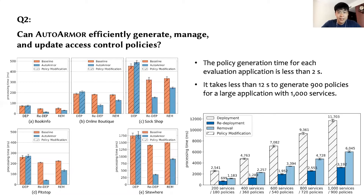The second question is: can AutoArmor efficiently generate, manage, and update access control policies? We measured its processing time in dealing with this task and compared it with the baseline method that generates policies for all service versions separately. The result shows that AutoArmor's policy generation time for each application is less than 2 seconds, and it achieved better performance than the baseline method in policy update and removal. For a large application with 1000 services, it takes less than 12 seconds to generate 900 policies, which indicates its potential for large-scale scenarios.